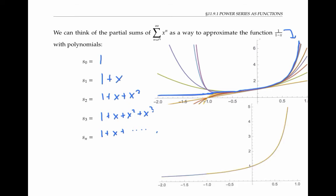I want to show one more graph. The function one over one minus x is shown in blue, and the graph of the power series, the sum of x to the n, is shown in orange. The blue function is actually obscured by the orange function, because the two functions are identical for values of x between negative one and one. The only difference is that one over one minus x is defined for all x values except one, which is why we can see the blue graph even when x is less than negative one. However, the function given by this power series has domain between negative one and one, and so it only exists there.